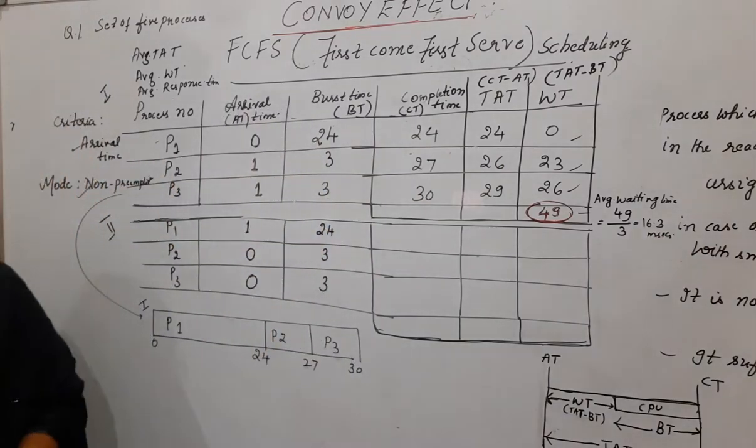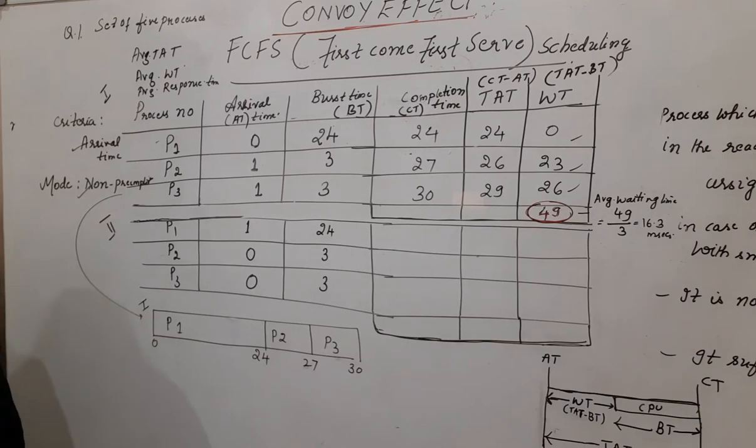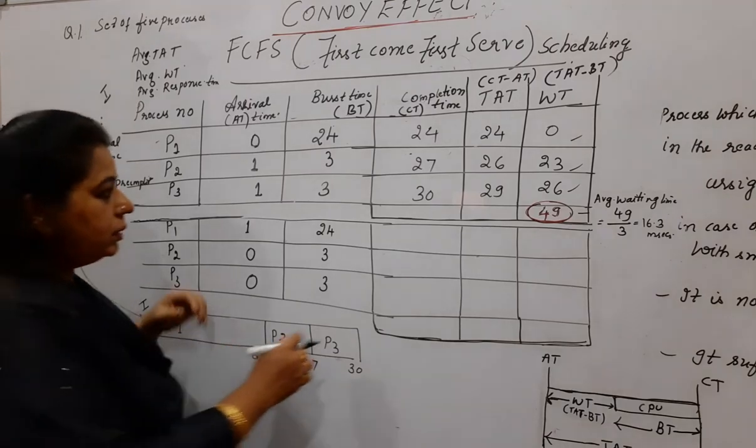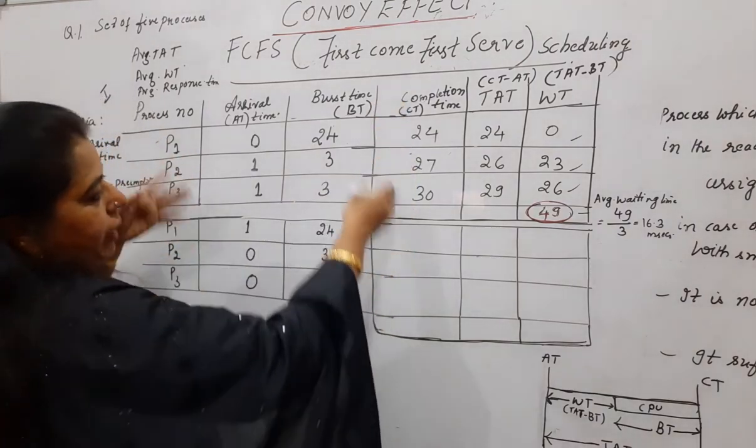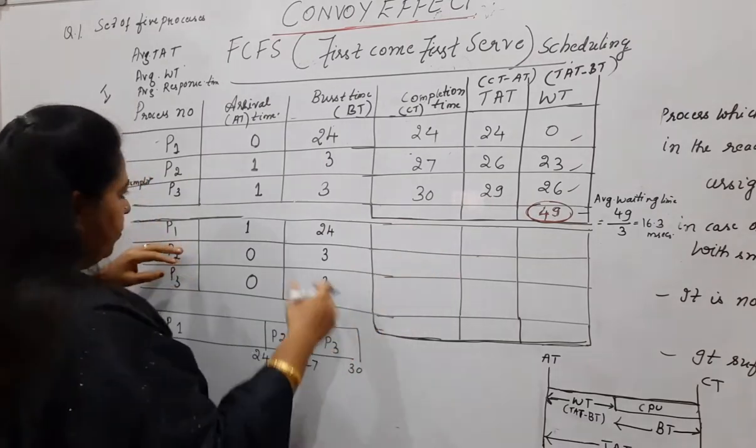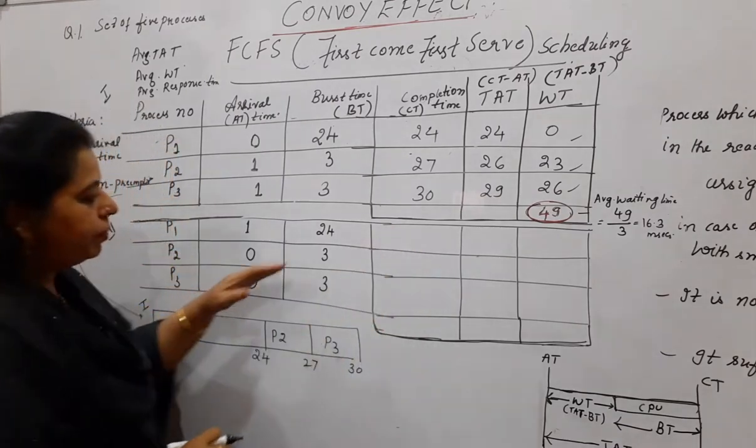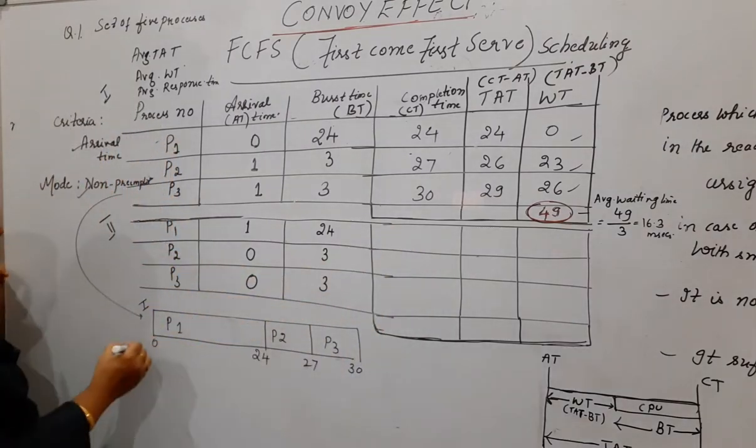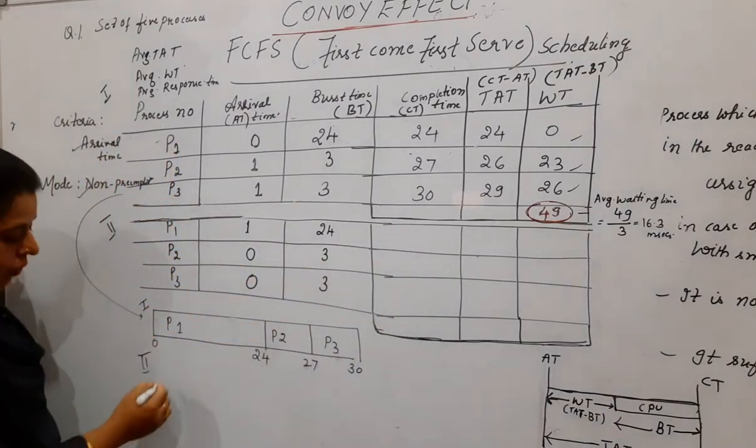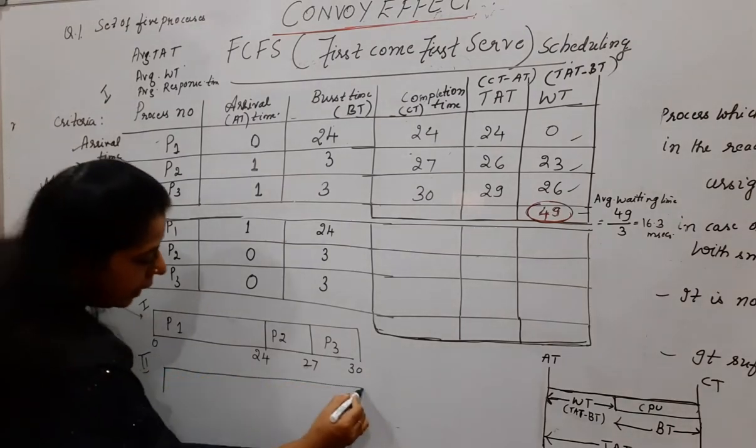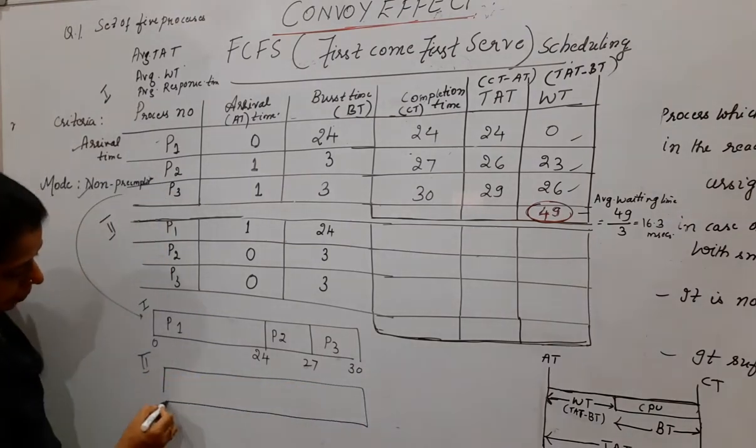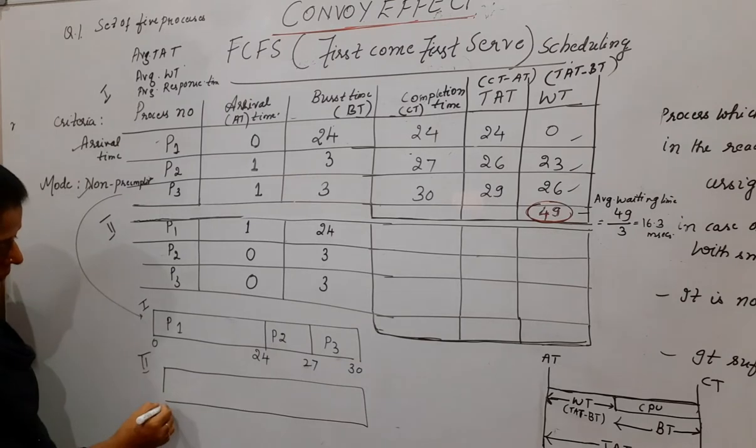Quickly complete now the second example. I am just maintaining the same column headings. But you have to write down separately in the exam. Now completion time. But before filling the values for the completion time, for the second situation also, you are supposed to show it in the Gantt chart. The complete schedule. Now let us start from the 0th. See, the arrival time for process P1 is 1.